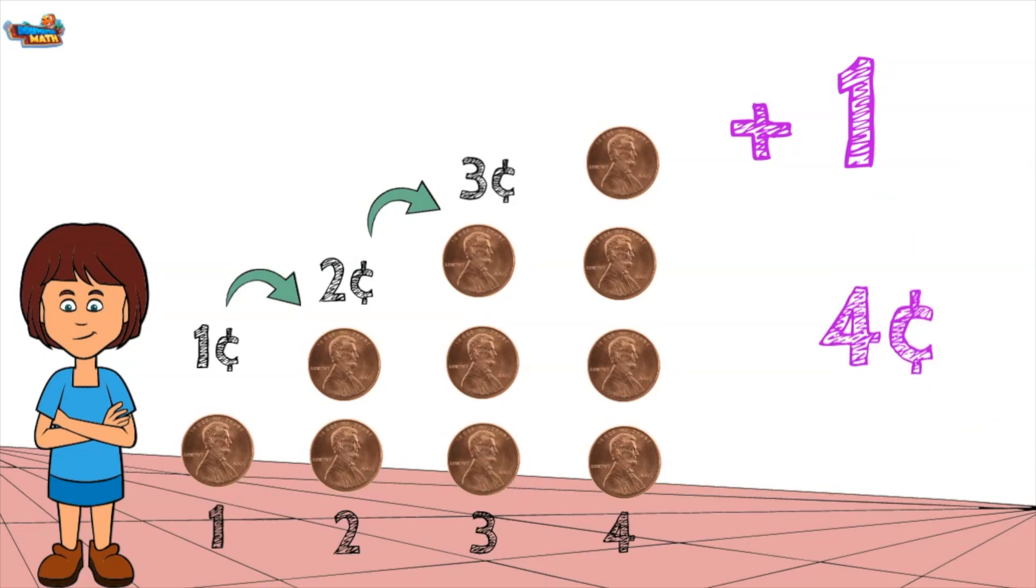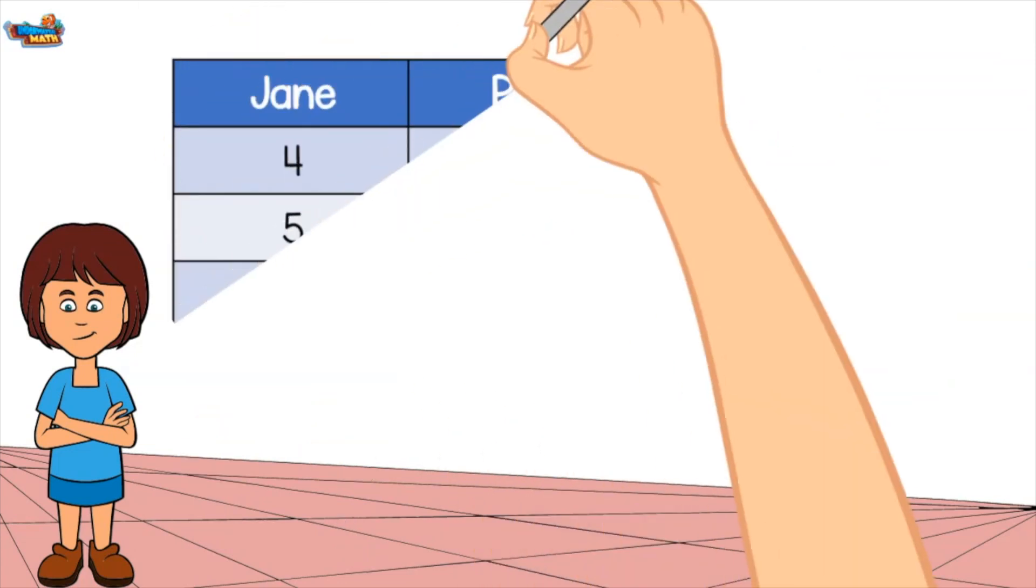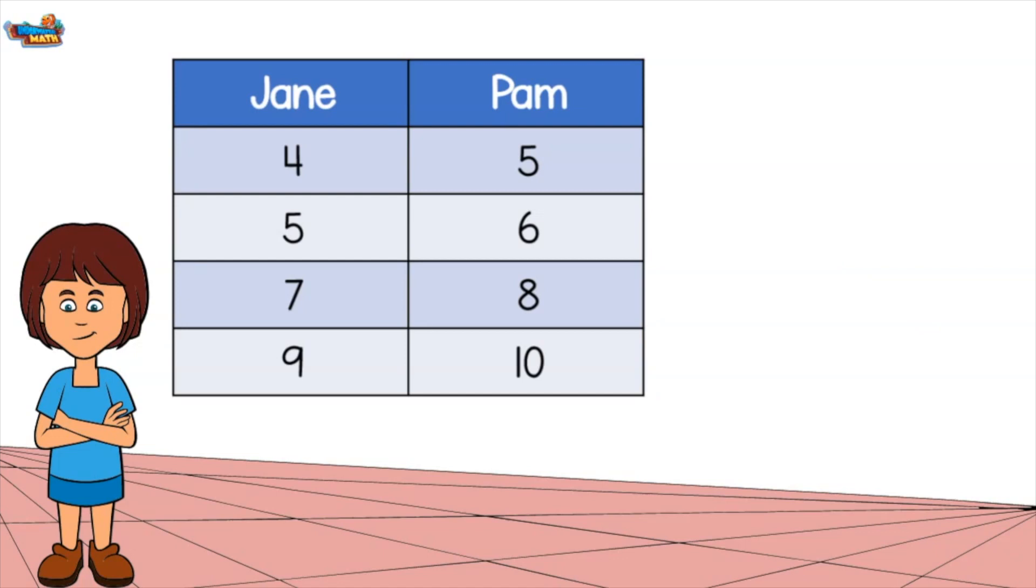Once we know the rule, we can use it to continue on any pattern. Last tool for today. Here is a table showing the ages of 2 girls.